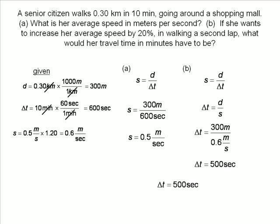We want the time in minutes. One minute contains 60 seconds. The seconds cancel out and we get our time of 8.3 minutes.